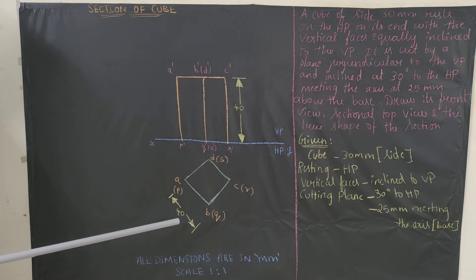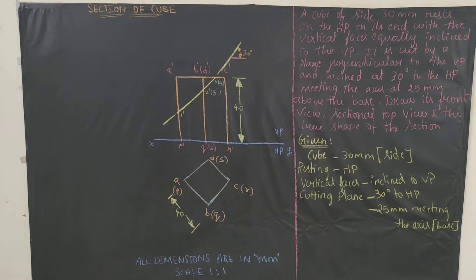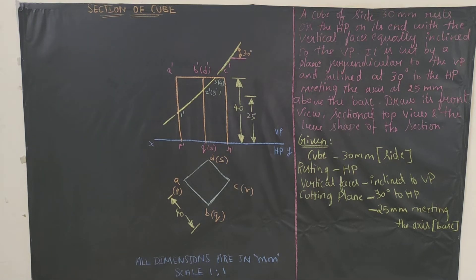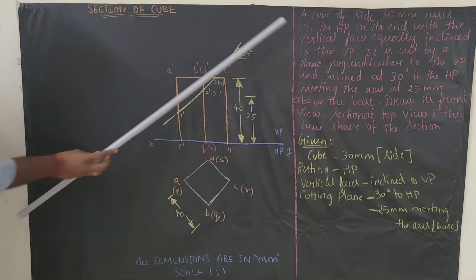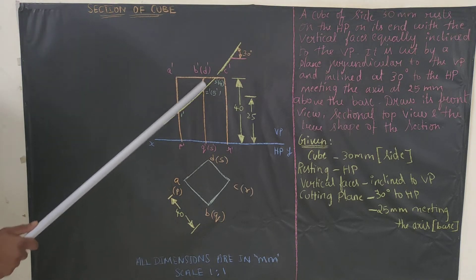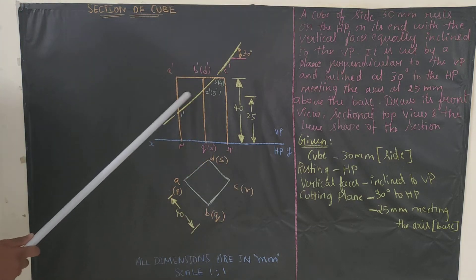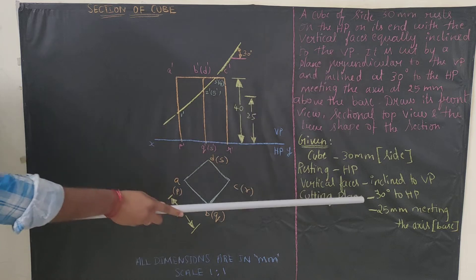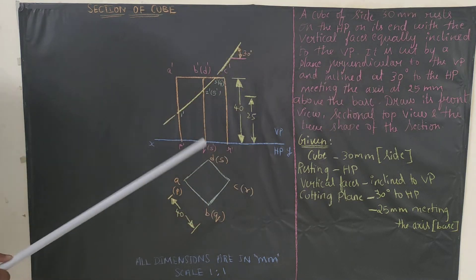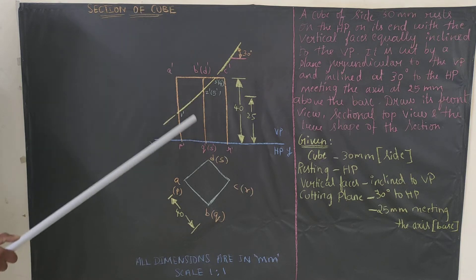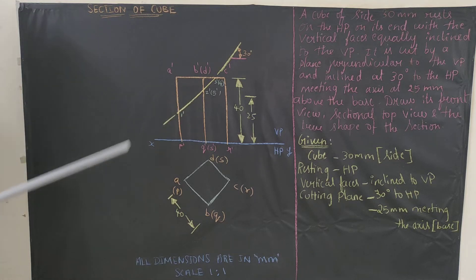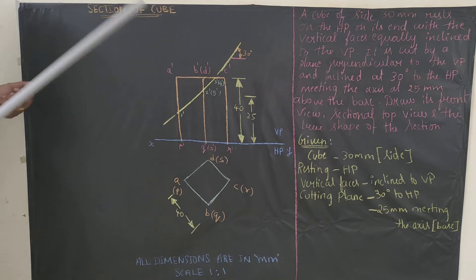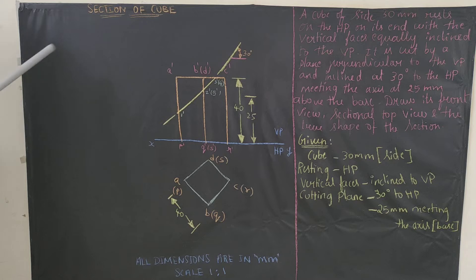Now I will explain how to draw the cutting plane. The cutting plane meets the axis at 25mm above the base. From the base, measure 25mm up the axis and keep a point. Take your protractor and try to draw a horizontal reference line through that point. Whatever diagram I have drawn is a rough diagram — when you draw with exact dimensions, your output will differ, so draw carefully with exact measurements and follow the procedure.